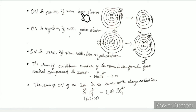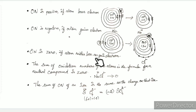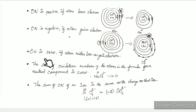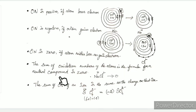Electron loss is oxidation. When an atom neither loses nor gains electrons, its oxidation number is zero. The sum of oxidation numbers of atoms in the formula for a neutral compound is zero.